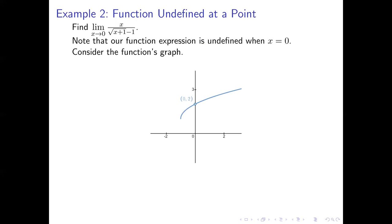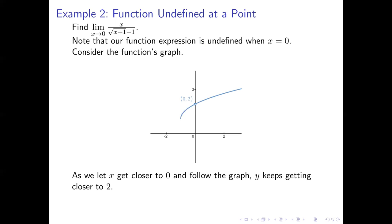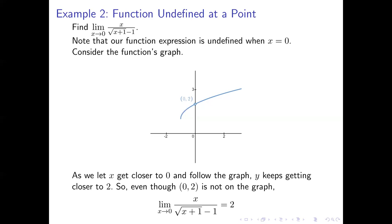Notice there's what we call a hole at the point (0, 2), so that point is not on the graph. But if you pick any other point on the graph and start moving closer and closer to where x equals 0, you'll find that your y-coordinates are getting closer and closer to 2. So even though (0, 2) is not on the graph, the limit as x approaches 0 of that function is still equal to 2.